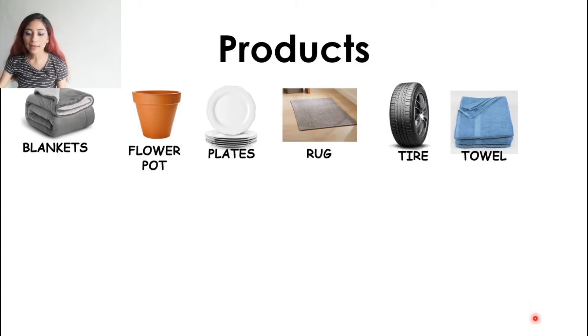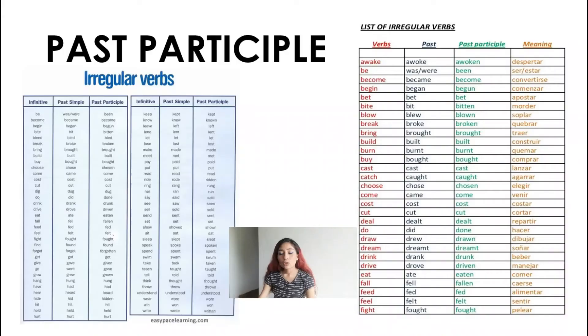The products we have are: blankets, flower pots, plates, rope, tire, and towel. Now let's check the passive voice. To make sentences using passive voice, you need to learn your past participle verbs.